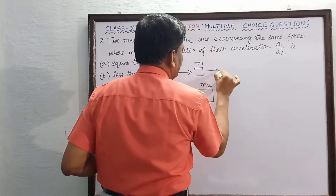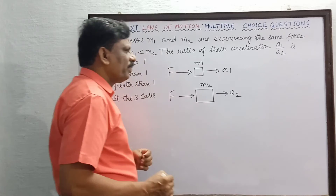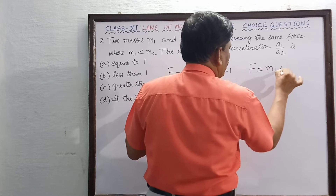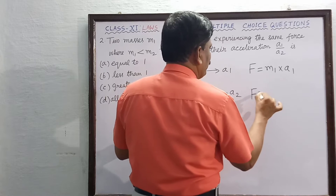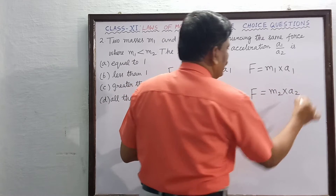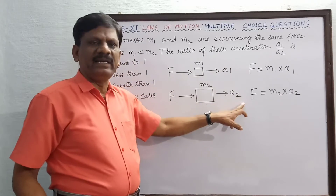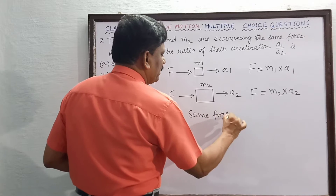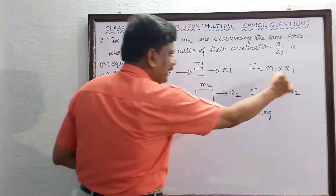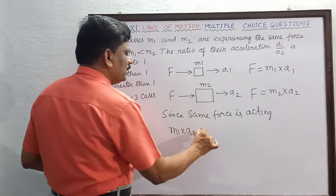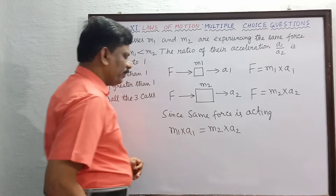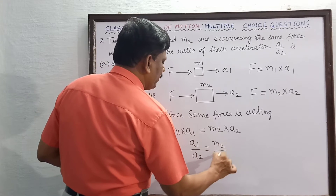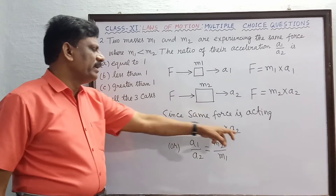Since the same force is acting on both masses, we can write: m1 into a1 is equal to m2 into a2. Therefore, a1 by a2 is equal to m2 divided by m1.